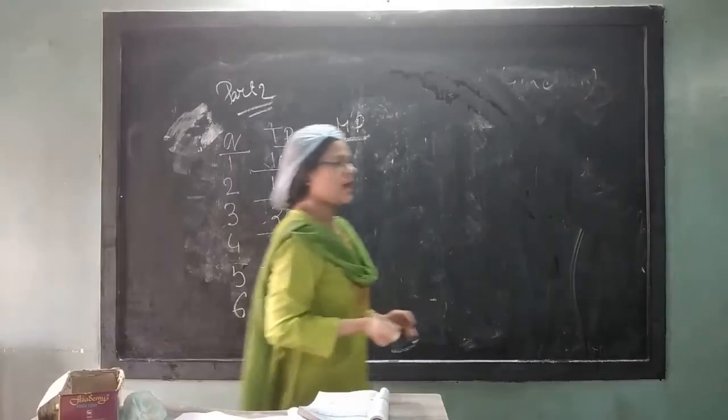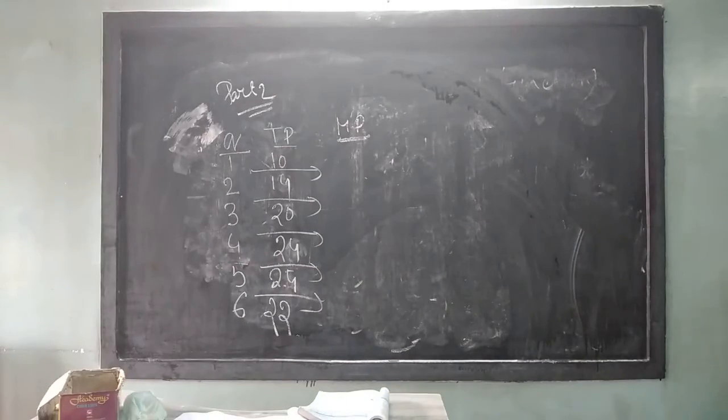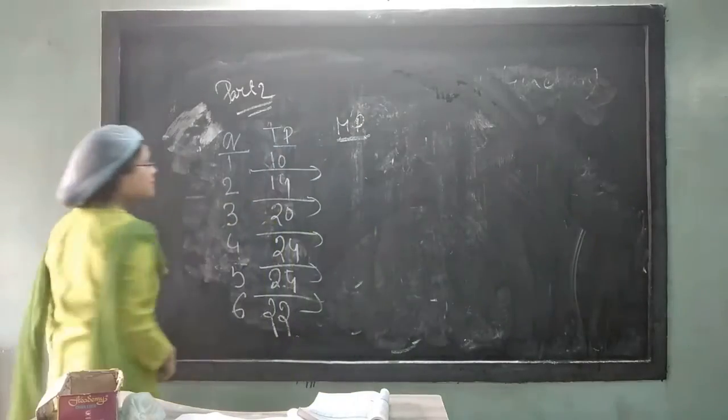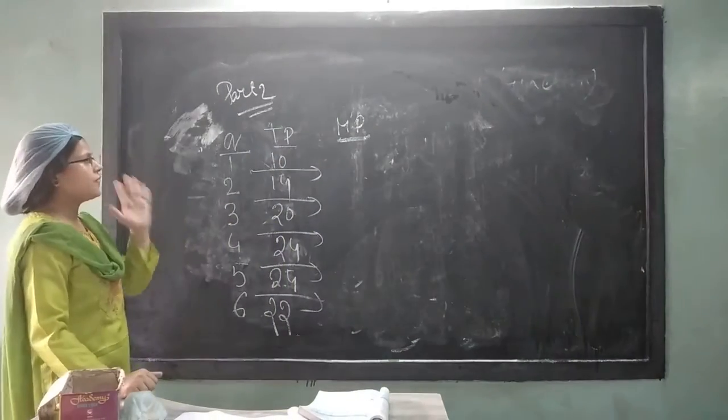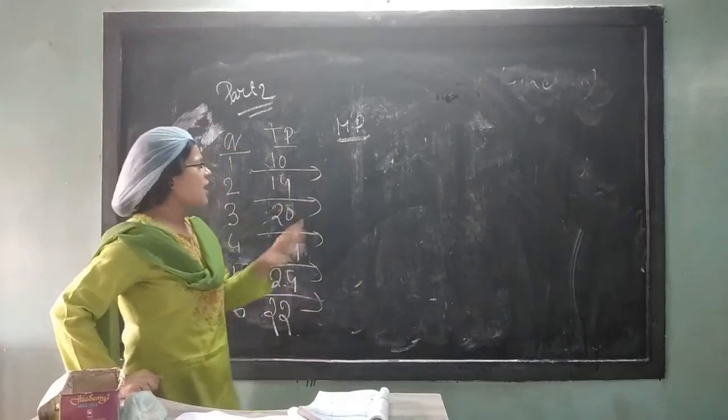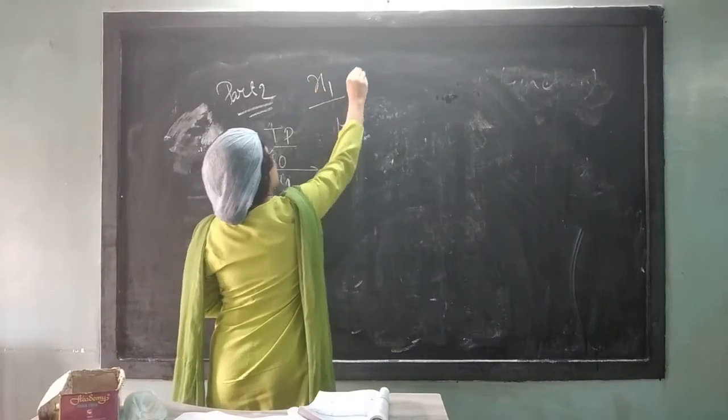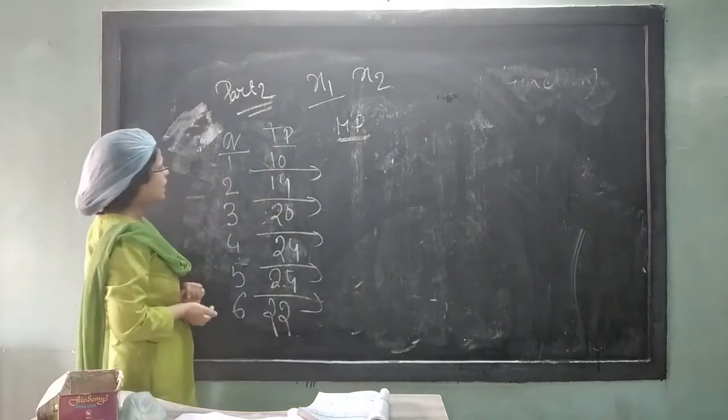In this theory, we have assumed that in the law of variable proportion, one factor is fixed and other factor is variable.